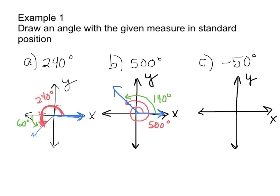Now for negative 50 degrees. We still start at our initial side. Negative angles go clockwise — the opposite way. So negative 50 is only going to be going down 50 degrees. That right there would be negative 50 degrees. Notice that in example 1 part B, 500 degrees and 140 degrees are the exact same angle.